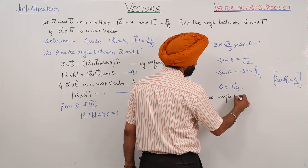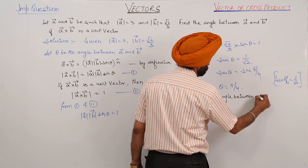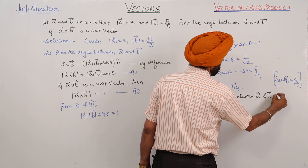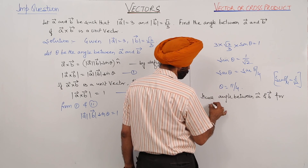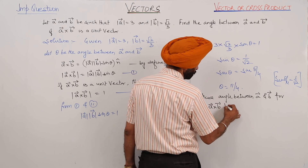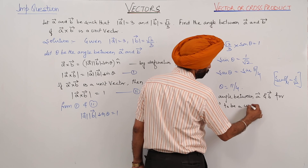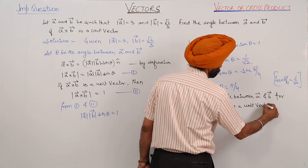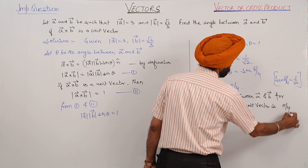Hence, the angle between vector A and vector B for vector A cross vector B to be a unit vector is pi by 4, which is also equal to 1 upon square root of 2 in sine value. Therefore, theta equals pi by 4.